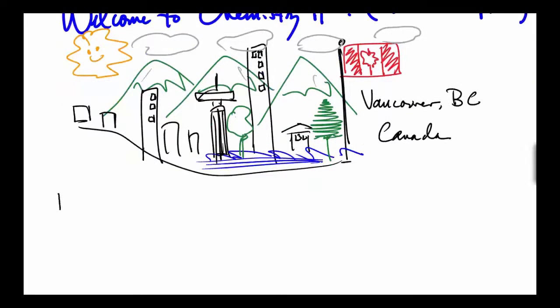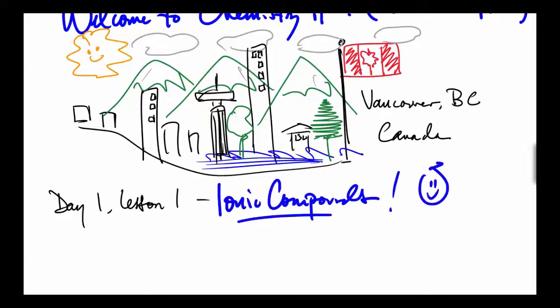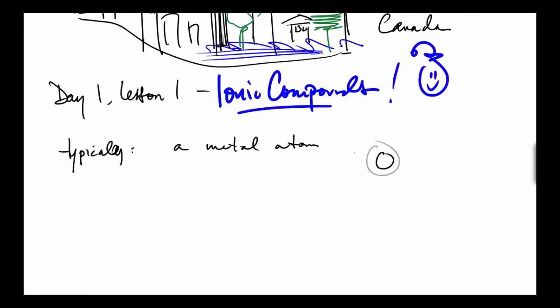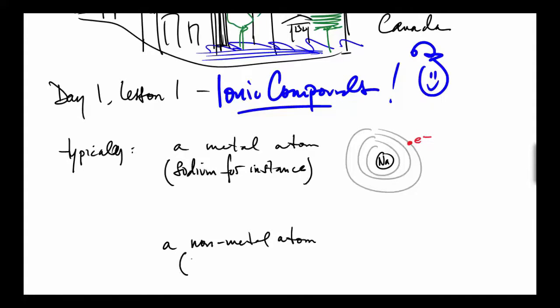Just so you get a sense of context here, on the first day in the first lesson of Chemistry 11, we learn about ionic compounds. Typically, ionic compounds are made of a metal atom, like sodium for instance, and a nonmetal atom, like fluorine for instance.